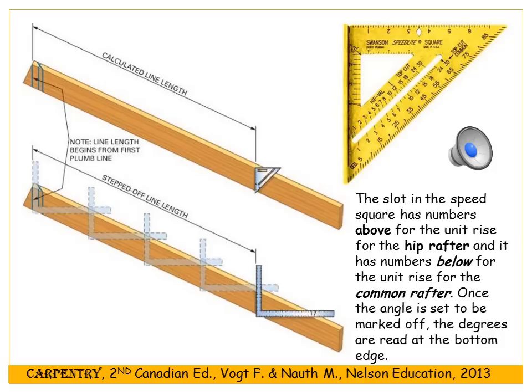Here we see the speed square and framing square being used to lay out the hip rafter length. With the speed square, you calculate your line length but can immediately read the angle. With the framing square, you can step off the rafter length but won't know the angle — however, a sliding T bevel can help find it. The numbers above the slot in the speed square are for the hip rafter; numbers below are for the common rafter.